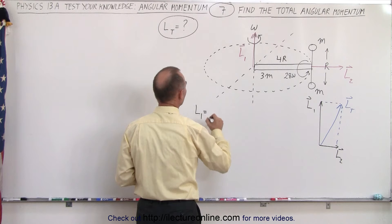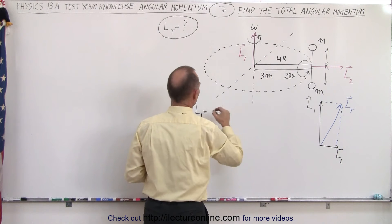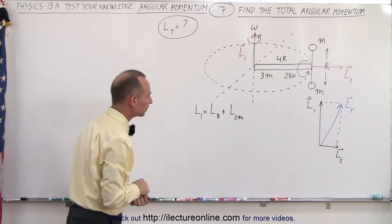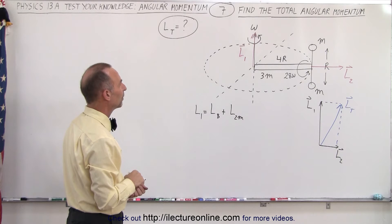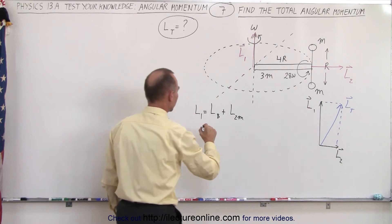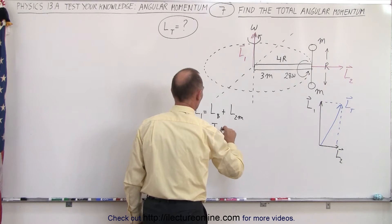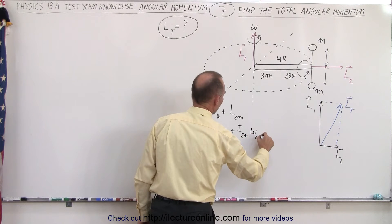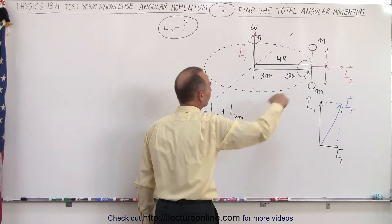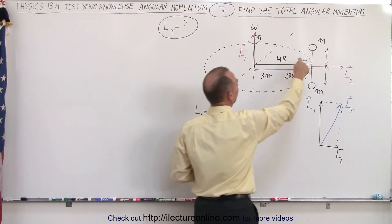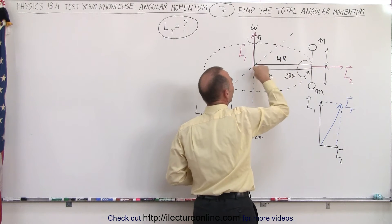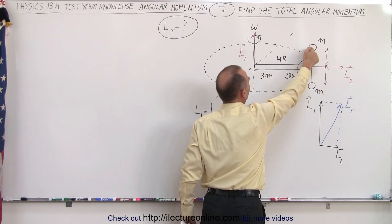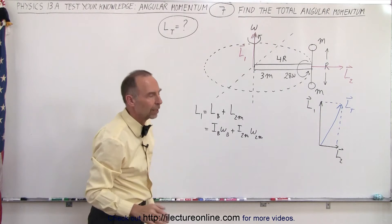So we can say that L1 is equal to the angular momentum of the bar plus the angular momentum of the two masses. The angular momentum of the bar is I_bar times omega, plus I of the two masses times their omega. Now the omega is going to be the same for both as they go around the vertical axis. Also noting that the distance from the pivot to the end is approximately 4R — the angle is small, so we'll just assume that distance is simply equal to 4R as an approximation.